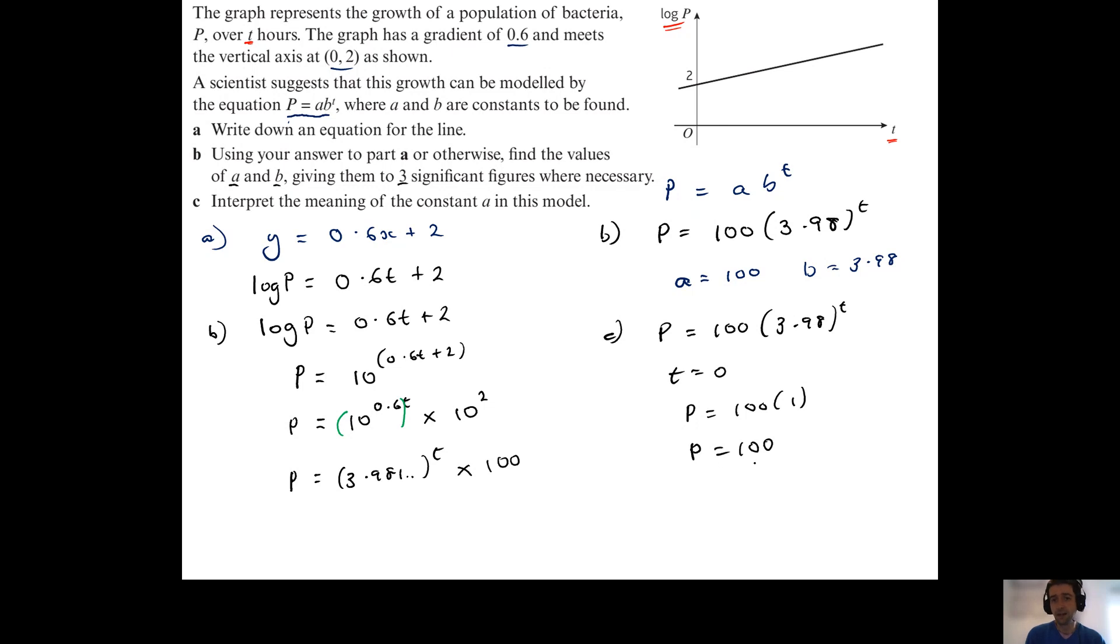So when t equals 0, p would equal 100. So the value of a is the value of p when t equals 0, which means that there were initially 100 bacteria present in the colony. So a is the initial value of p, so there were 100 bacteria in the colony originally or at the start of the experiment.